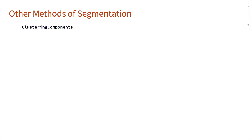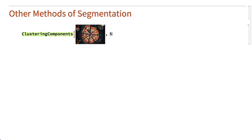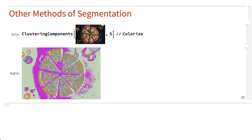There are many other methods of segmentation. One method is clustering, which can segment an image by grouping similar colors in an image. This shows segmentation by clustering used to separate the sample image into five segments. The colorize function is used here to display each segment in a contrasting color.